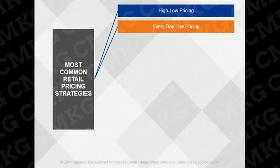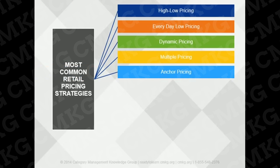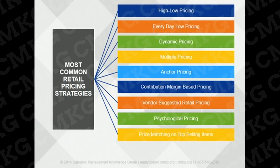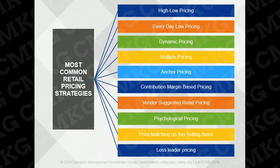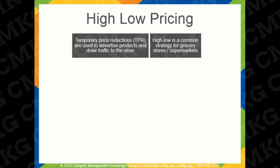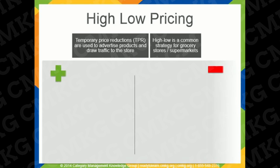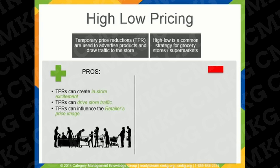There are many different pricing strategies that retailers may choose from. Here are some of the more common ones. High-low pricing is a strategy that's most common in grocery stores and supermarkets. This pricing strategy focuses on temporary price reductions as a means to advertise products and draw traffic to the store.